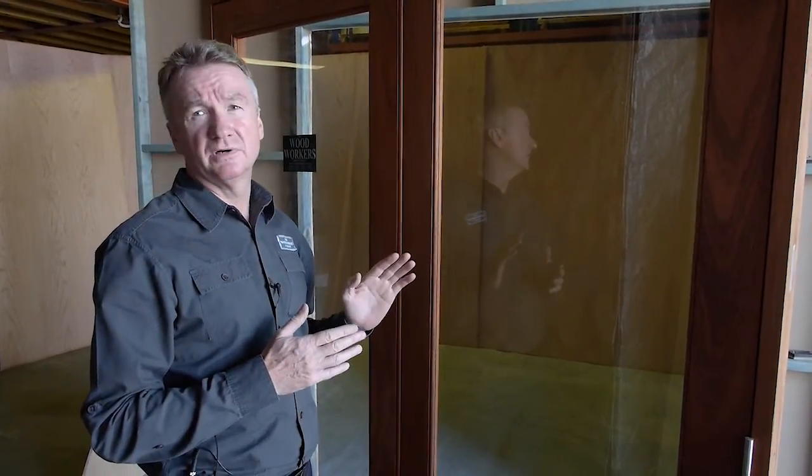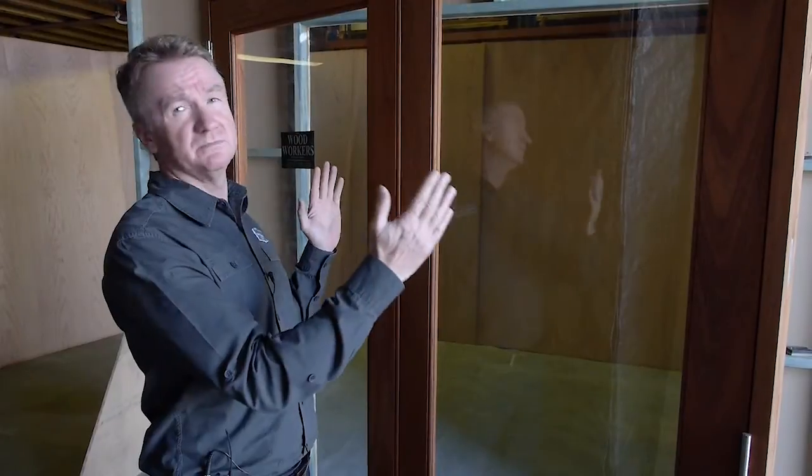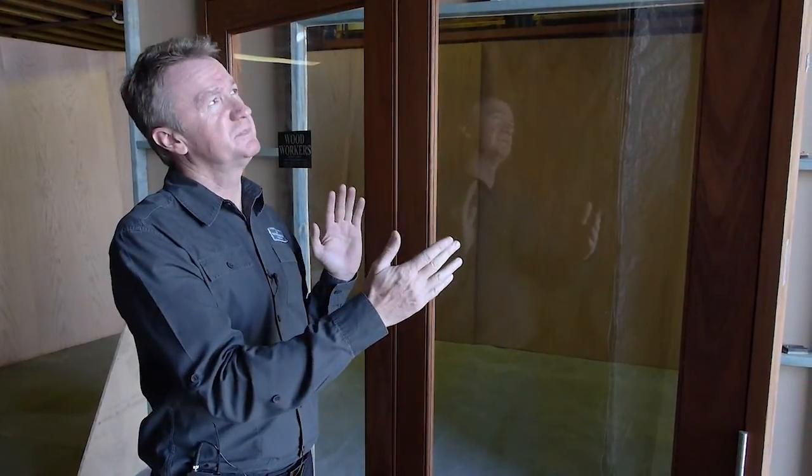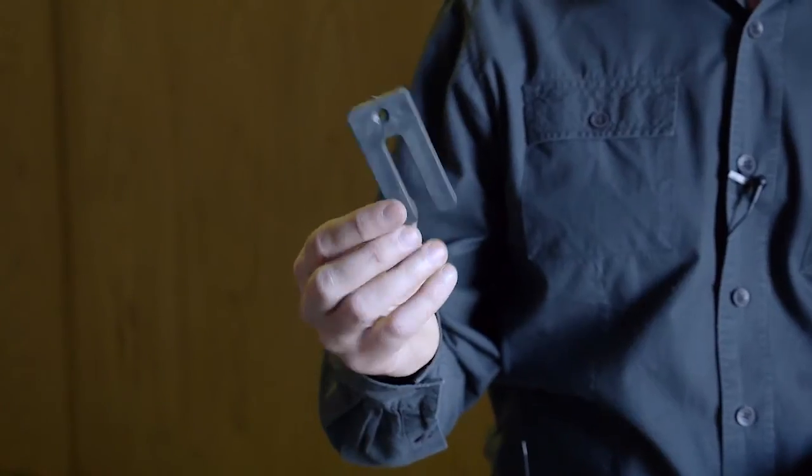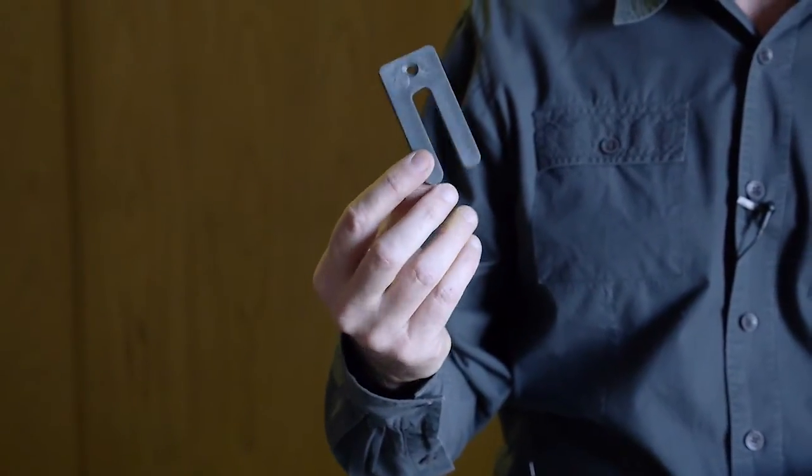But that isn't a problem because the doors aren't fitted. The frames can move around anywhere. Once the frame's put in position and fitted off correctly, the gaps will be even. What we have here is a plastic packer. They're also known as shims. So you can use plastic or you can use timber.